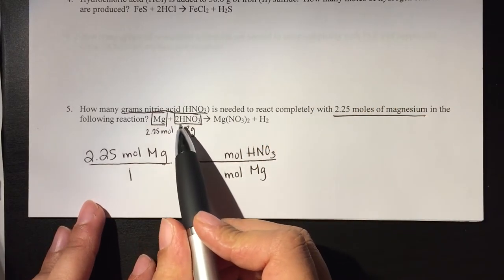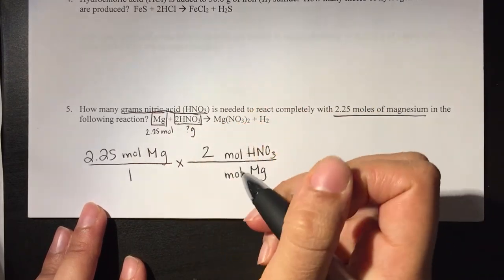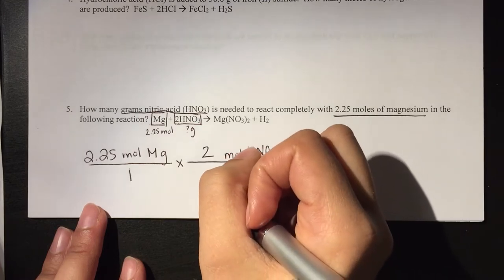Now I can connect moles of magnesium to moles of nitric acid. And if we look at our mole ratio, for every 2 moles of nitric acid, there is 1 mole of magnesium.